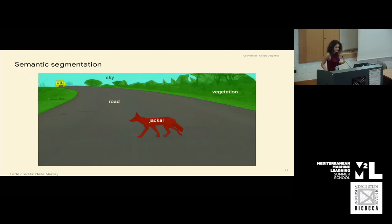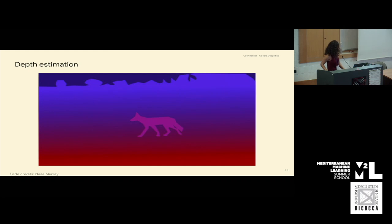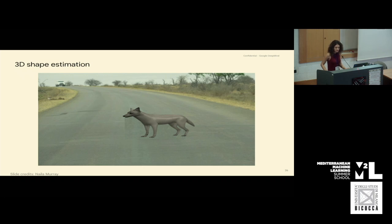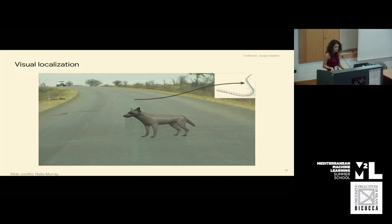Semantic segmentation is a pixel-level task. It shows which category each pixel belongs to — like road, jackal, vegetation — and is therefore called a dense task. There is also depth estimation, which predicts how far each pixel in the image is from the camera, also considered a dense task. There is 3D shape estimation, estimating the 3D shape of an object from a 2D image. Lastly, there is the visual localization problem: given a global map of the environment and a given image, predicting where the image corresponds to in that global map.